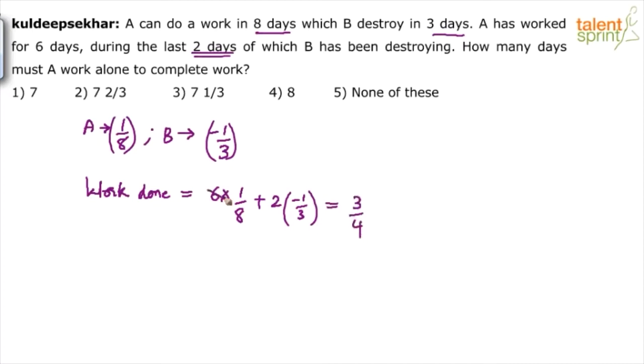6 by 8 is like 3 by 4 minus - how much is this? Minus 2 by 3. So 3 by 4 minus 2 by 3. 12 is LCM. So this is like 9 minus 8, 1 twelfth of the work is done. So work done in 6 days, where A worked for 6 days and in the last 2 days B has been destroying, is 1 twelfth. 1 twelfth is done.